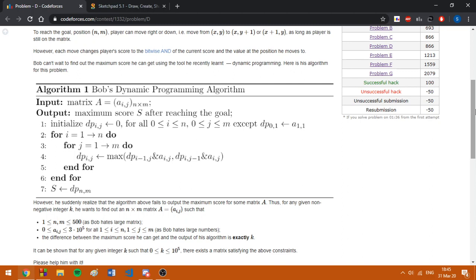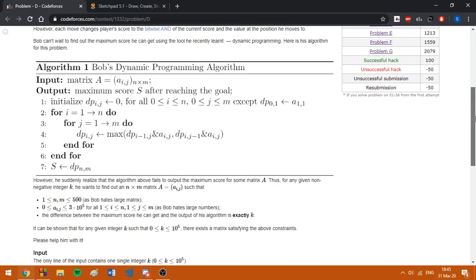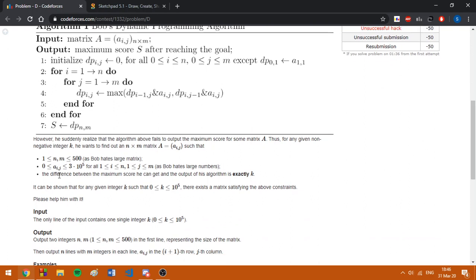So, we need to find a matrix of size N times M, such that the numbers are up to 300,000 and the dimensions are up to 500.